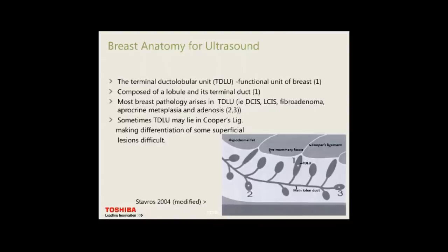The amount of TDLUs determines breast density. The TDLU is the functional unit of the breast, composed of the lobule and its terminal duct. Most breast pathology arises in the TDLU, such as DCIS, lobular carcinoma in situ, fibroadenoma, apocrine metaplasia, and adenosis. Sometimes the TDLU may lie up within the Cooper's ligament, making differentiation of some superficial lesions difficult.